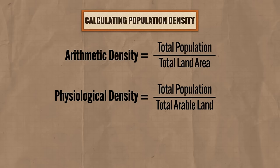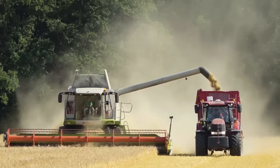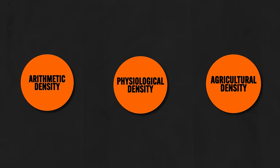The third method is agricultural density, which is the total number of farmers divided by the total arable land. A lower number means fewer farmers available to grow food, but in wealthy industrialized countries that means farming has become mechanized — fewer farmers using big machines. On the other hand, a high agricultural density usually means many farmers are subsistence farmers, growing only what they need to survive. None of these calculations alone tells the whole story, but together they give a complete picture of population density.